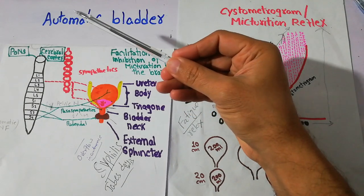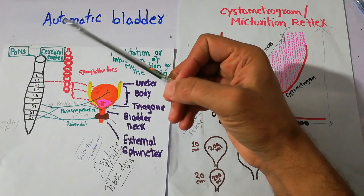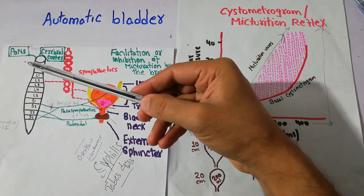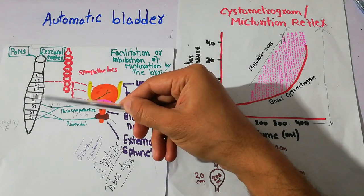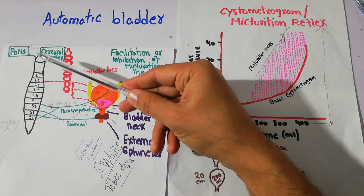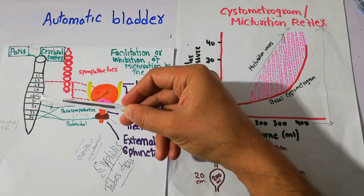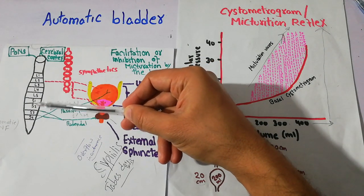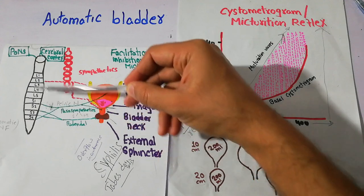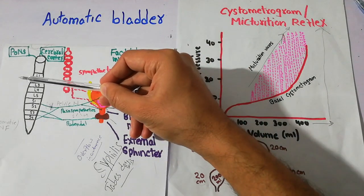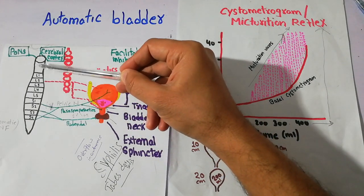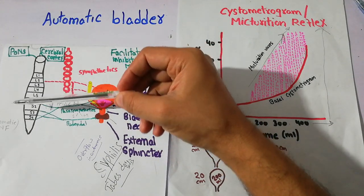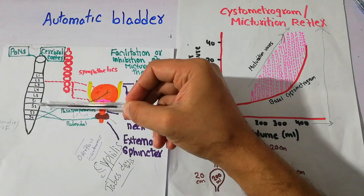Why does automatic bladder occur? Automatic bladder occurs when there is injury of the spinal cord, but the sacral segment is intact. For example, there is injury of the lumbar region or above the lumbar region, but this sacral segment is intact.